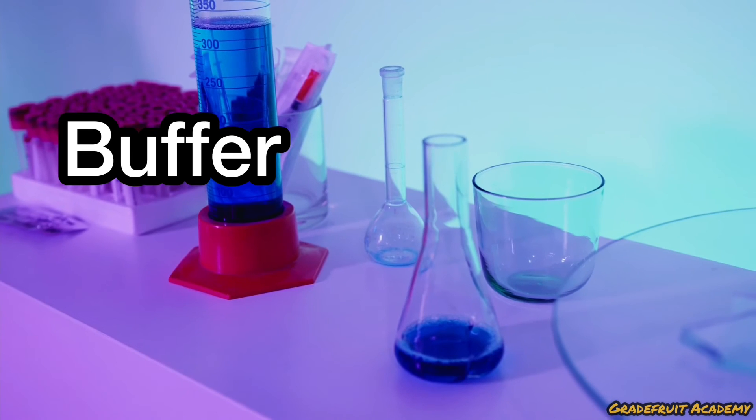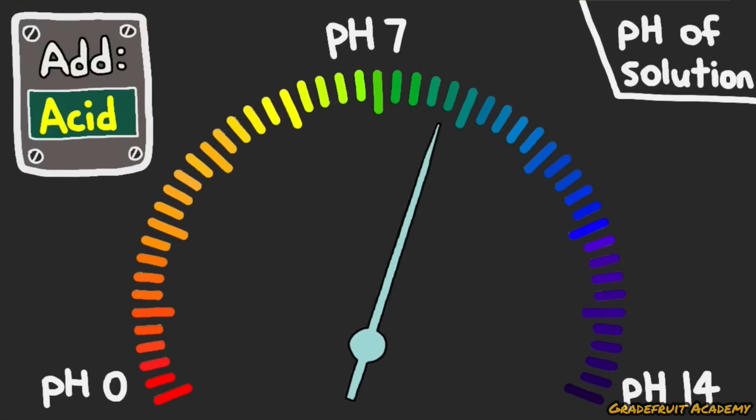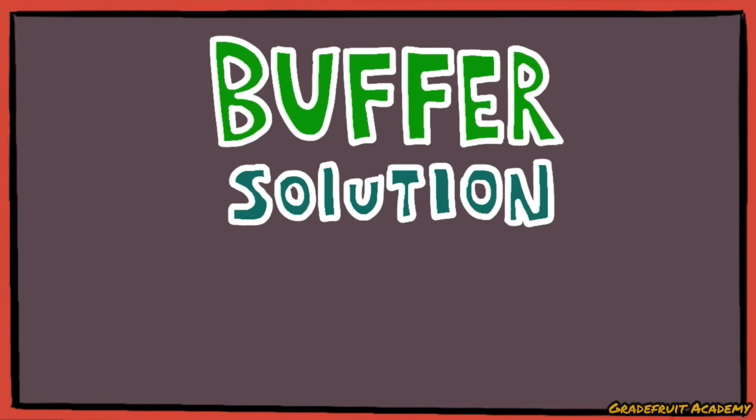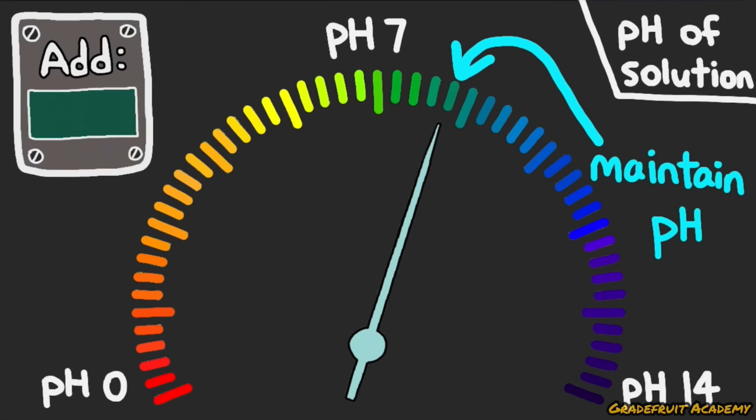Next, we will learn about buffer solutions, which basically helps a solution to maintain its pH when a small amount of acid or base is added to the solution. There are two types of buffer solutions, acidic and alkaline buffers. But it doesn't really matter because both of them still serve the exact same purpose.